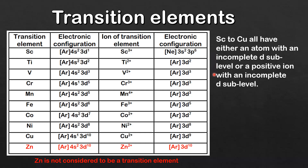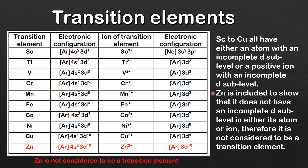Zinc is included to show that it does not have an incomplete D sublevel in either its atom or ion, and therefore it is not considered to be a transition element. We can see that zinc's atom has a full 3D sublevel, and the 2+ ion also has a full 3D sublevel.